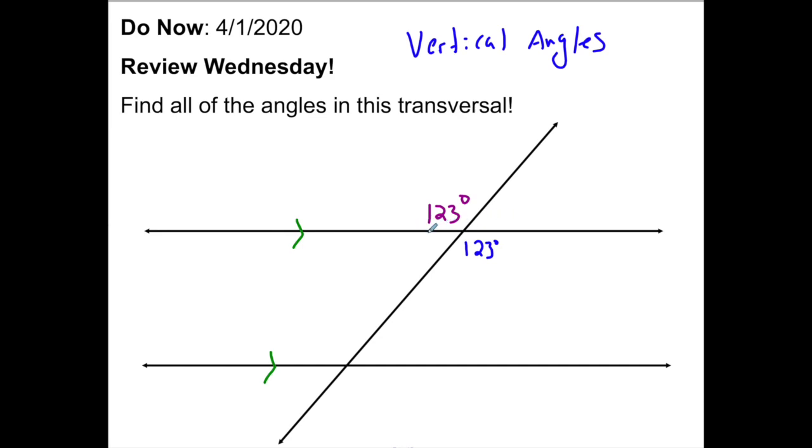Also, because this is a flat line, these two angles next to each other need to add up to 180. So I'm going to do this in red—this needs to be 57 degrees, so they add up to 180. And then if this is 57 degrees, this here is 57 degrees due to vertical angles.